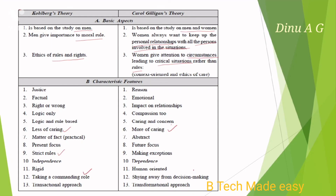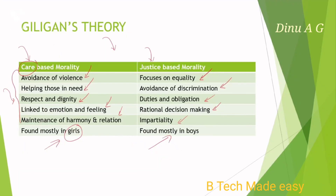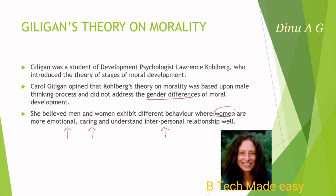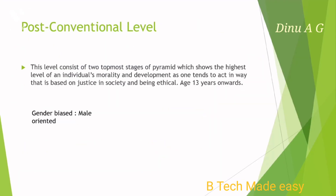Key characteristics in the comparison include: shying away from decision making, independence, right or wrong, impact and relations, justice — justice is important — and reason. This concludes the moral development theory comparison between Kohlberg's theory and Gilligan's theory.